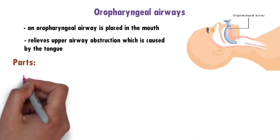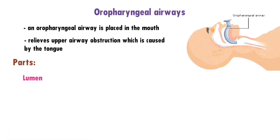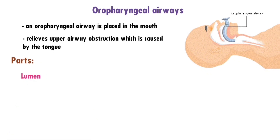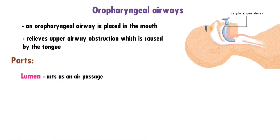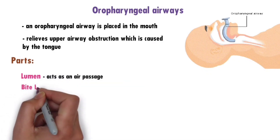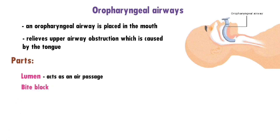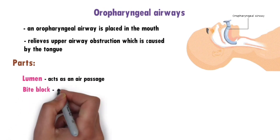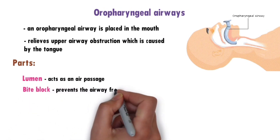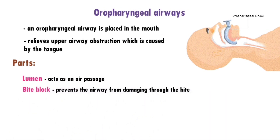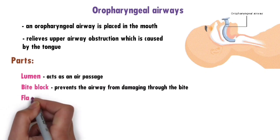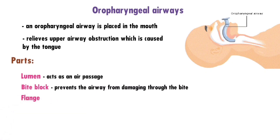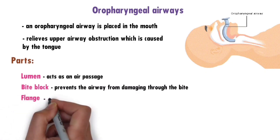Parts of the oropharyngeal airway: it has a body, a lumen which acts as an air passage, a bite block that prevents the airway from being damaged through biting, and a flange which prevents it from slipping into the mouth.